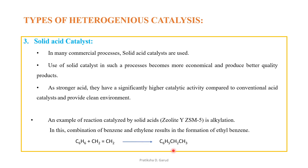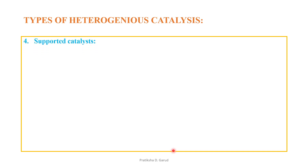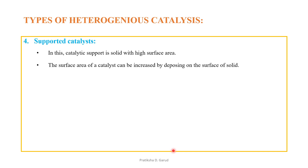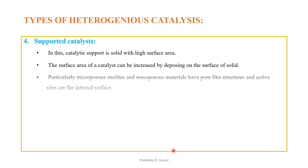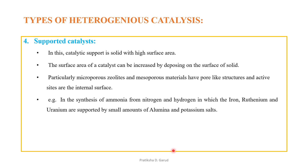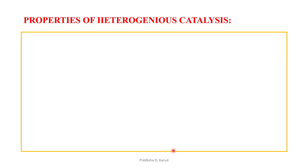The reaction is: benzene + ethylene → ethylbenzene (C₆H₅CH₂CH₃). The fourth type is supported catalysts, where the catalytic support is a solid with high surface area. The surface area of the catalyst can be increased by depositing it on a solid surface — particularly microporous zeolites and mesoporous materials, which have pore-like structures and active internal surface sites. For example, in ammonia synthesis, iron, ruthenium, and uranium are supported by small amounts of alumina and potassium salts: N₂ + 3H₂ → NH₃.